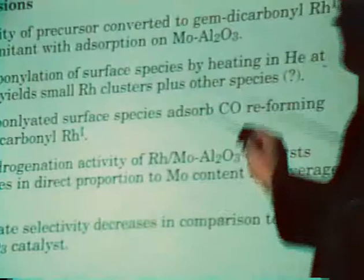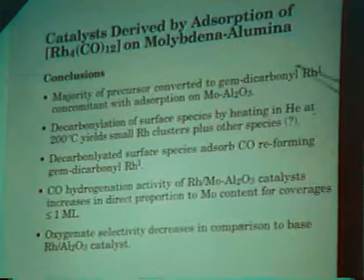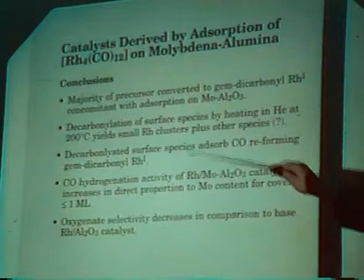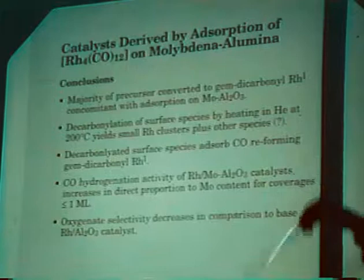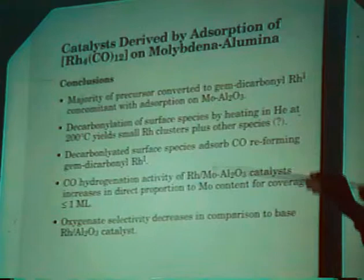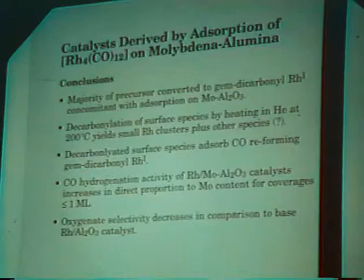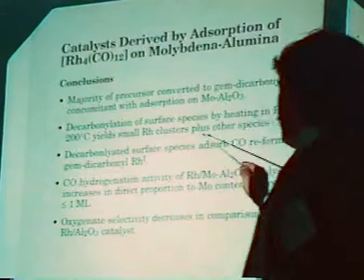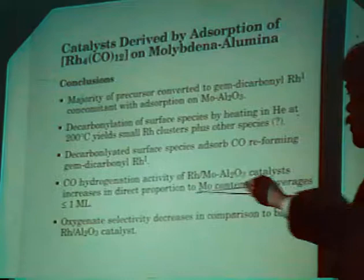Conclusions for the first catalyst preparation method: the molybdenum-modified alumina surface is active to oxidatively fragment rhodium-carbonyl clusters adsorbed over it. Decarbonylation of the rhodium-1 gem-dicarbonyl yields small rhodium clusters plus perhaps some unreduced rhodium-1 in the sample. Hydrogenation activity increases in direct proportion to molybdenum content, consistent with literature. However, oxygenate selectivity decreases — you don't get a benefit in oxygenate selectivity from this preparation approach.